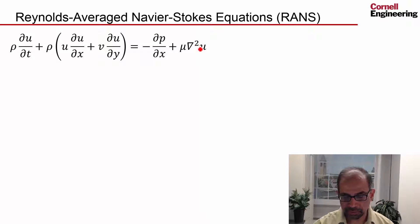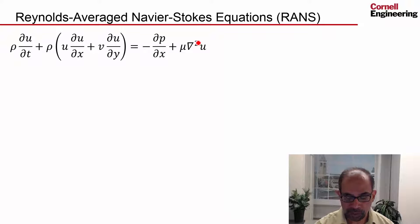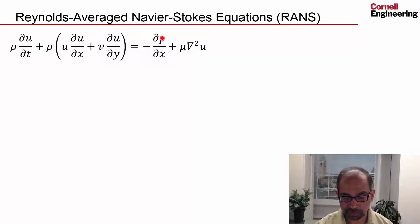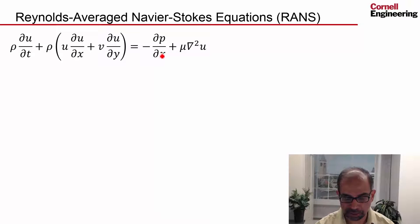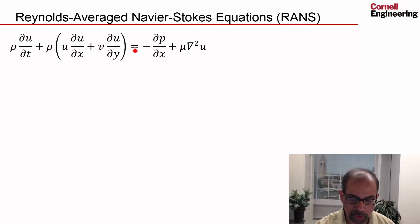The Navier-Stokes equations for x-direction momentum conservation look like that. These terms are familiar — for instance, one term represents the net pressure force on our infinitesimal fluid particle moving through the flow. This is written as force per unit volume, and so on.